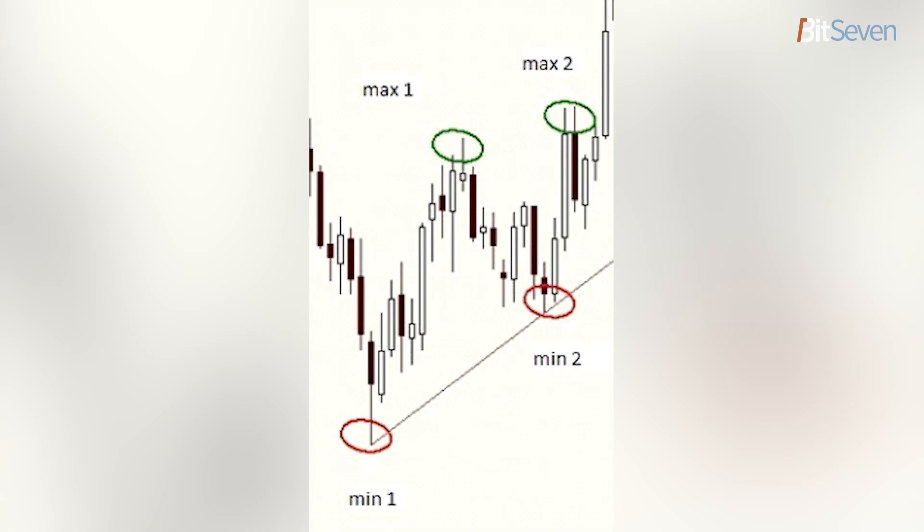To determine an established trend, we see two or more consecutive minimums on the chart, and we observe the appearance of a second maximum which is located above the previous one.